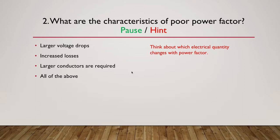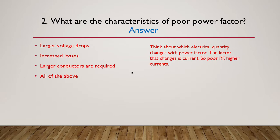The answer is all of the above — everything is affected. The factor that changes is current. A poor power factor always results in higher currents, and those currents don't actually do any practical work, but they still create voltage drops, still create losses, and larger conductors are required. So all of the above.